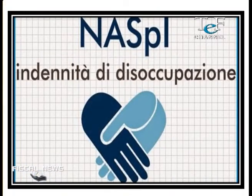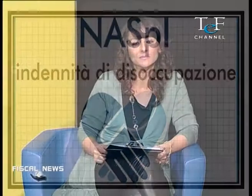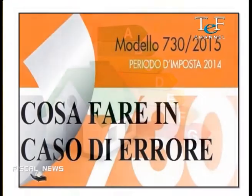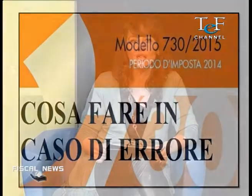Dal 1 maggio 2015 l'indennità di disoccupazione introdotta con il Job Act si chiama NASPI, acronimo di Nuova Assicurazione Sociale per l'Impiego. I casi di oggi: parleremo di ristrutturazione edilizia, errori del 730 2015, IMU e TASI. In studio la collega Ida Dominici. Benvenuta. Grazie per l'invito.